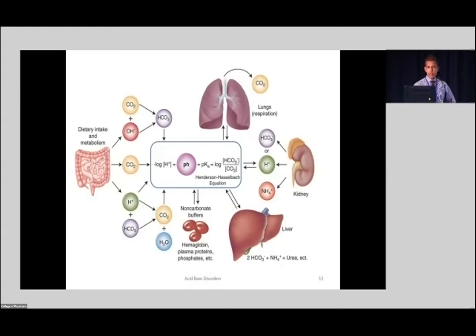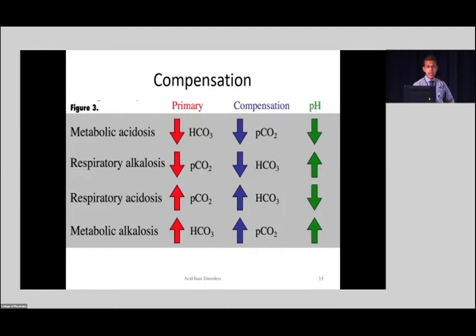There are four main types of acid-base disorders and the arrows of compensation always remain in the same direction. If the direction of arrows are in different ways, we know there has to be a mixed acid-base disorder. How do you know whether respiratory compensation for a metabolic acidosis is adequate? This is very important to make decisions regarding deteriorating patients. You use what is called Winter's formula — you calculate the expected carbon dioxide level for the patient's acid-base status.